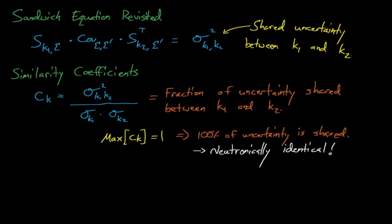In this case, the benchmark is a perfect, exact surrogate for the application, and any computational biases present in the benchmark will show their ugly faces in the same exact way in the application. We'll discuss this more in a few minutes, but our goal of sensitivity-based validation is to identify benchmark experiments that have a c-sub-k between our application and different benchmarks that is as close to one as possible, and then to use the observed computational biases in these highly similar benchmark experiments to predict the computational bias in our application.